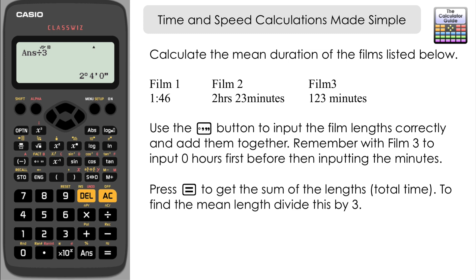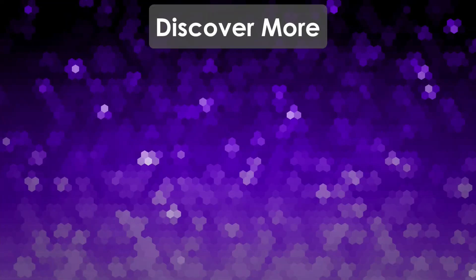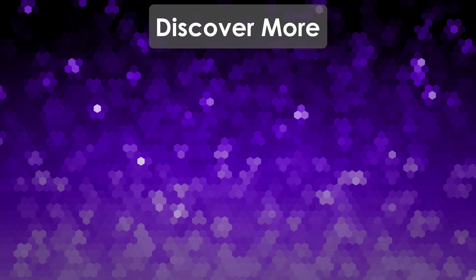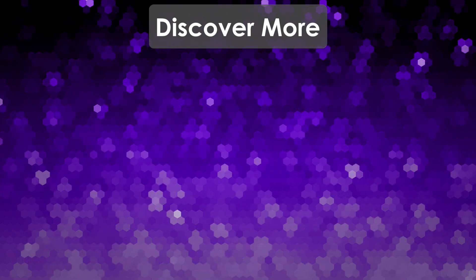So there we go—some different ways in which we can use the degrees minutes and seconds button, essentially the secret time calculation button that we have on the Casio scientific calculator. It's on quite a few different models, so just keep a lookout for it. Hopefully you've got one on yours and it's going to make some of these time and speed calculations a lot easier for you. But that's it for this video. Thank you very much for watching, and I will see you next time on the Calculator Guide.